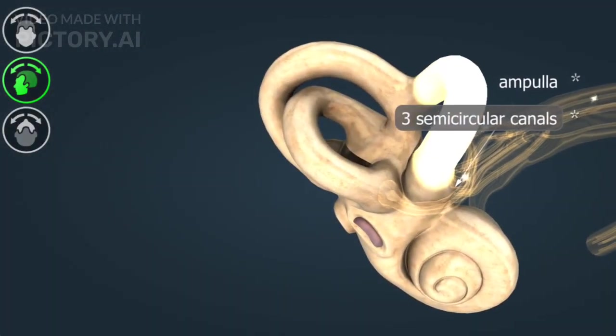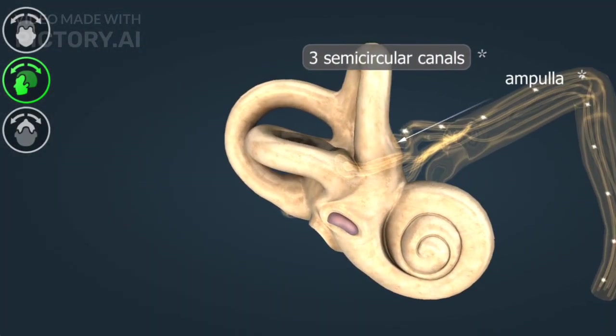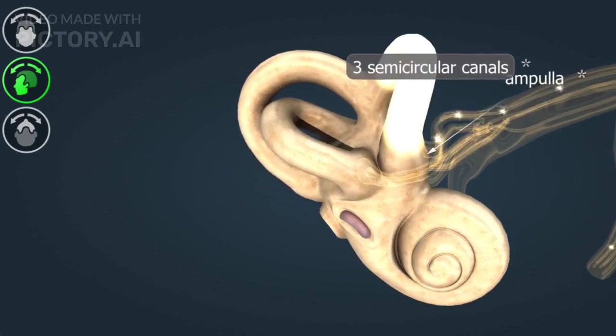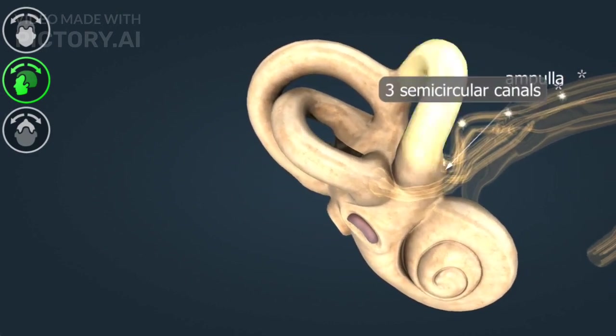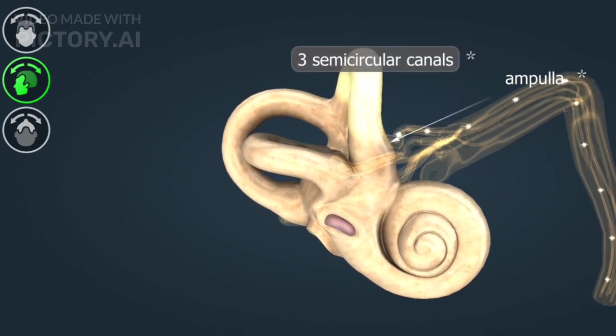This mechanical movement is converted into electrical signals by the hair cells. The electrical signals generated by the hair cells are transmitted to the brain via the auditory nerve.